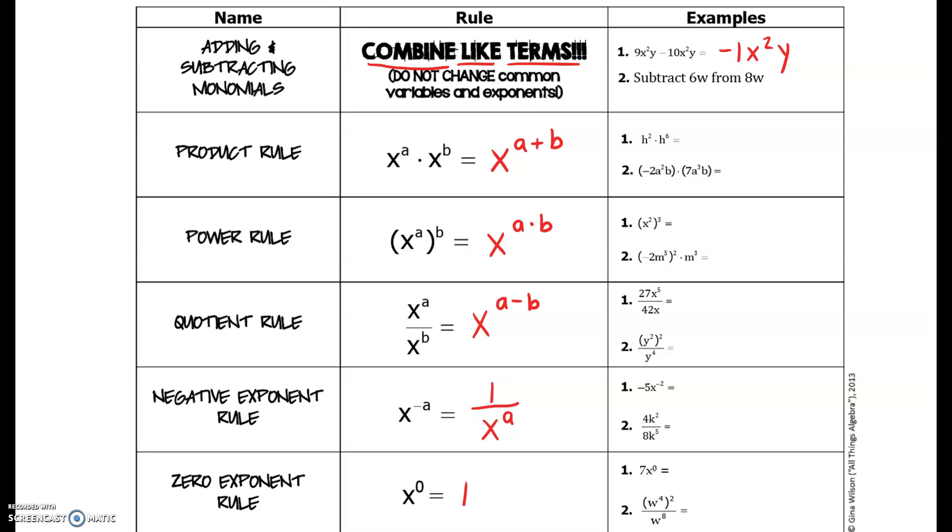It says subtract 6w from 8w, so the 8w will come first and the 6w will come after that. 8w minus 6w is 2w.